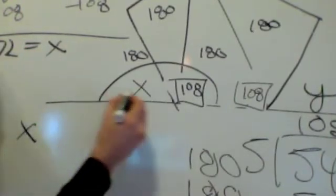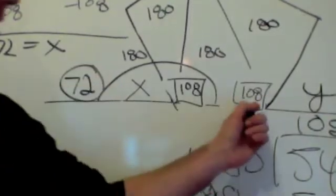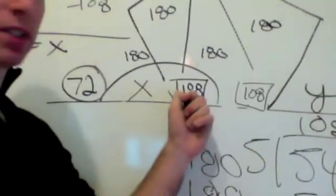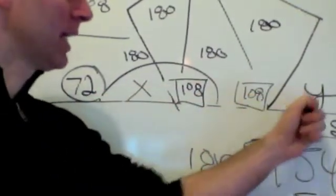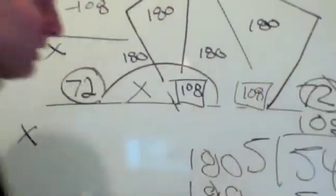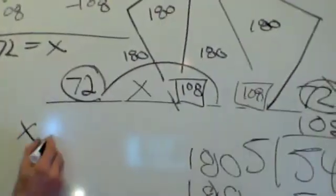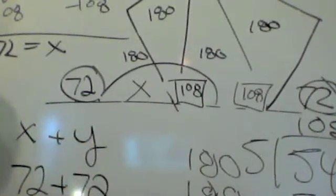Alright. So x, if x is 72, I think it makes sense that if we're looking for the supplement of 108, and that's going to be 72, the supplement of 108 is also going to be 72. So when we have this question here, x plus y, it's really saying what 72 plus 72 is, which is 144!